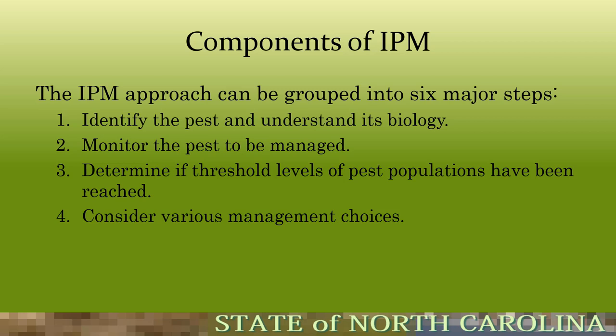The IPM approach can be grouped into six major steps. First, identify the pest and understand its biology. This is a major problem in the industry — many professionals can't identify plant materials, let alone the pests associated with them. Study your plant material, know your weeds, diseases, and insects. Second, monitor the pest to be managed. Once you've identified it, monitor it and document what you're seeing at regular intervals.